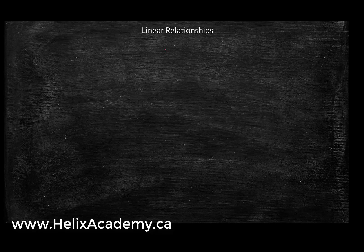Let's talk about what a linear relationship is. A linear relationship is defined to have a general form of y equals mx plus b, where m represents the slope of a line and b represents the y-intercept of the line — so where the line actually intersects the y-axis.